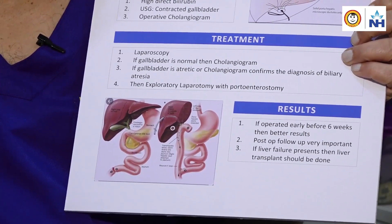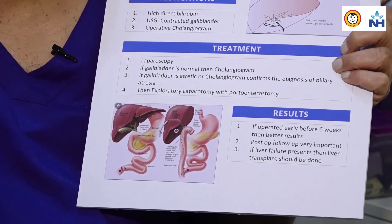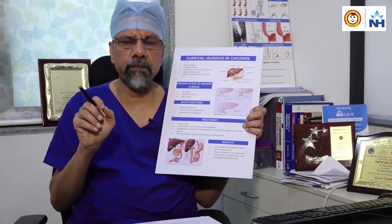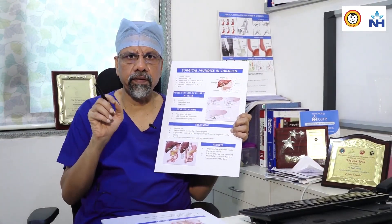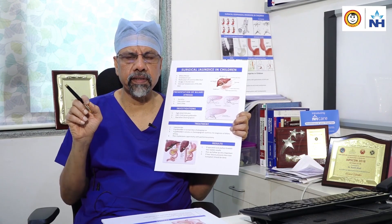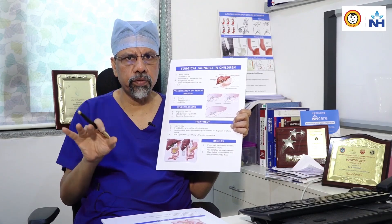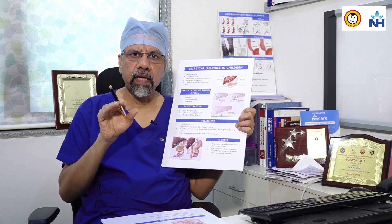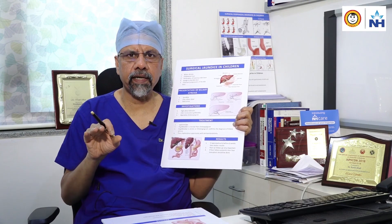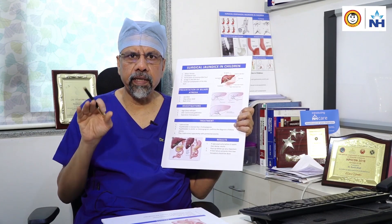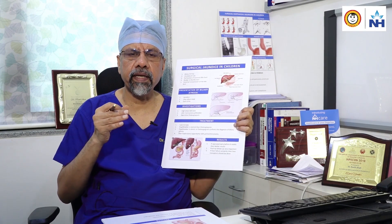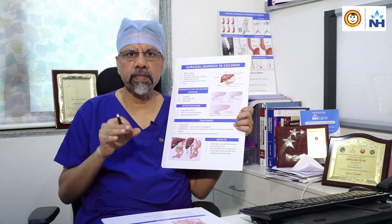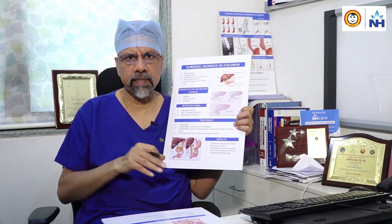The results of surgery are good if we operate before six weeks of life. My request to the family and treating physician is to refer any child with jaundice as early as possible to a pediatric surgeon. We do the minimum required investigations and proceed with surgery. If the bile ducts are not patent and bile is not excreted after surgery, the child may need a liver transplant. Early surgery can delay or even avoid the need for transplant. All these surgeries can be done at SRCC Children's Hospital.